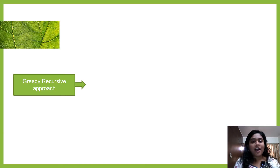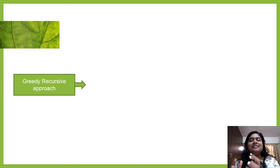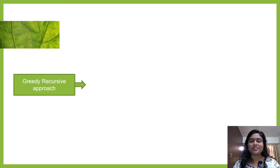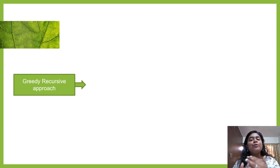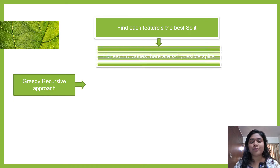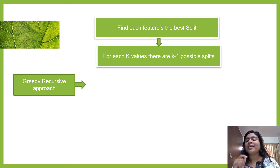In CART you see something known as a greedy recursive approach. Greedy means you are selecting the best features only, and recursive means you are doing the same process over and over again until you reach a point where you have satisfied all the conditions. The first step is to find each feature's best split.